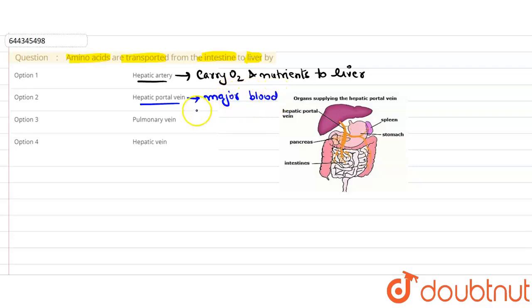We see here this is our hepatic portal vein and all the organs supplying the hepatic portal vein. We see here spleen, stomach, pancreas, intestine, gall bladder. All these organs transfer their juices, their secretions, to the liver through this hepatic portal vein.